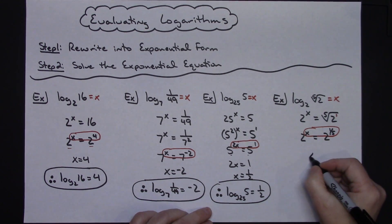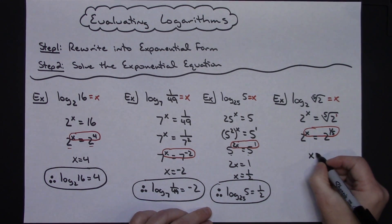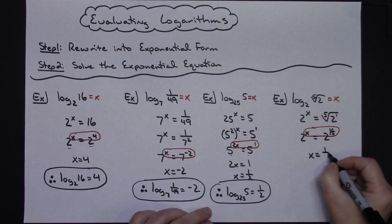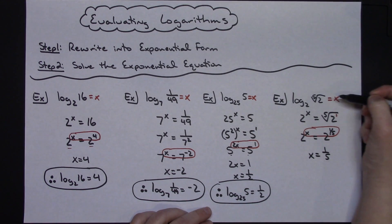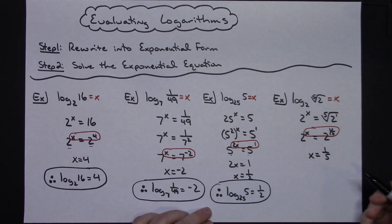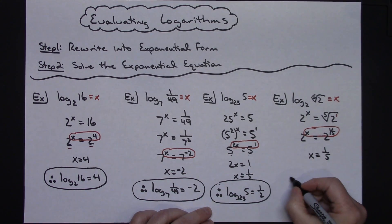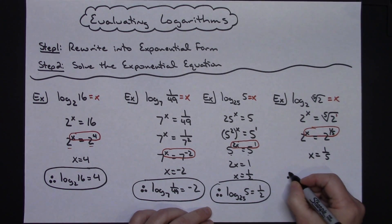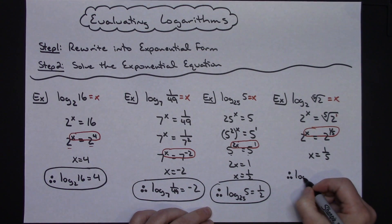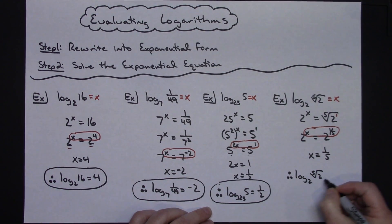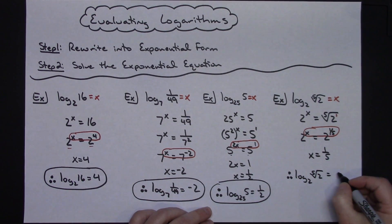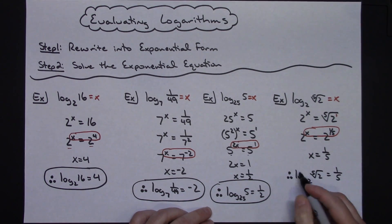I can immediately set my exponents equal to each other. This one is not difficult to solve at all — I just have x equals one-fifth. So evaluating this logarithm, I have an answer of one-fifth. Therefore, the log of the fifth root of 2 base 2 is equal to one-fifth.